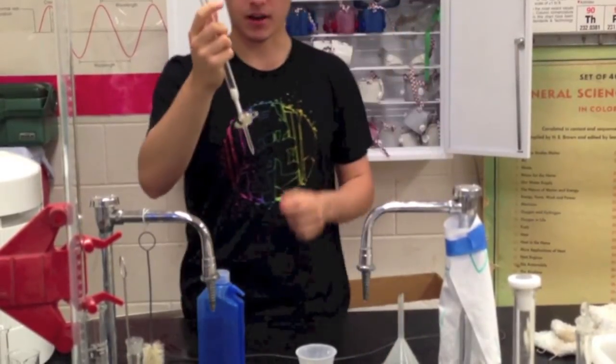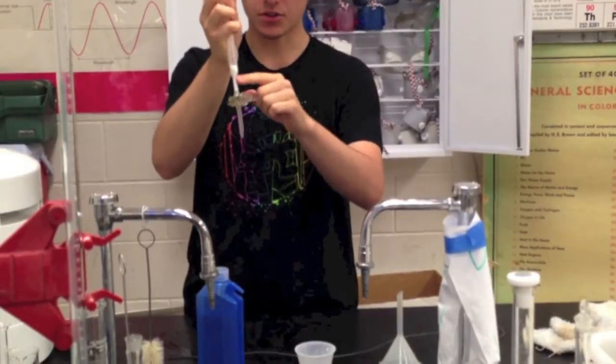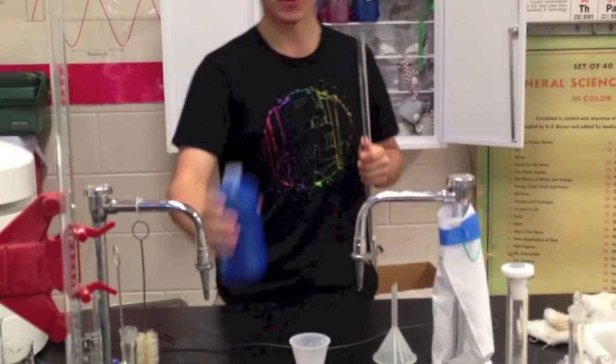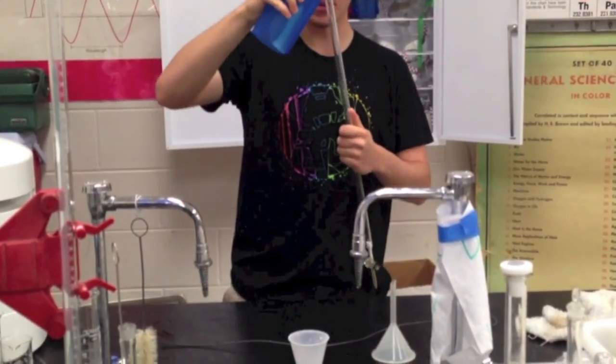Now, check your stopcock. Make sure that it's closed so no Alkonox detergent flows into the tiny tube at the bottom, or else it will get stuck and it will be very hard to get it out. Now, fill your burette up with distilled water to the 0ml mark.